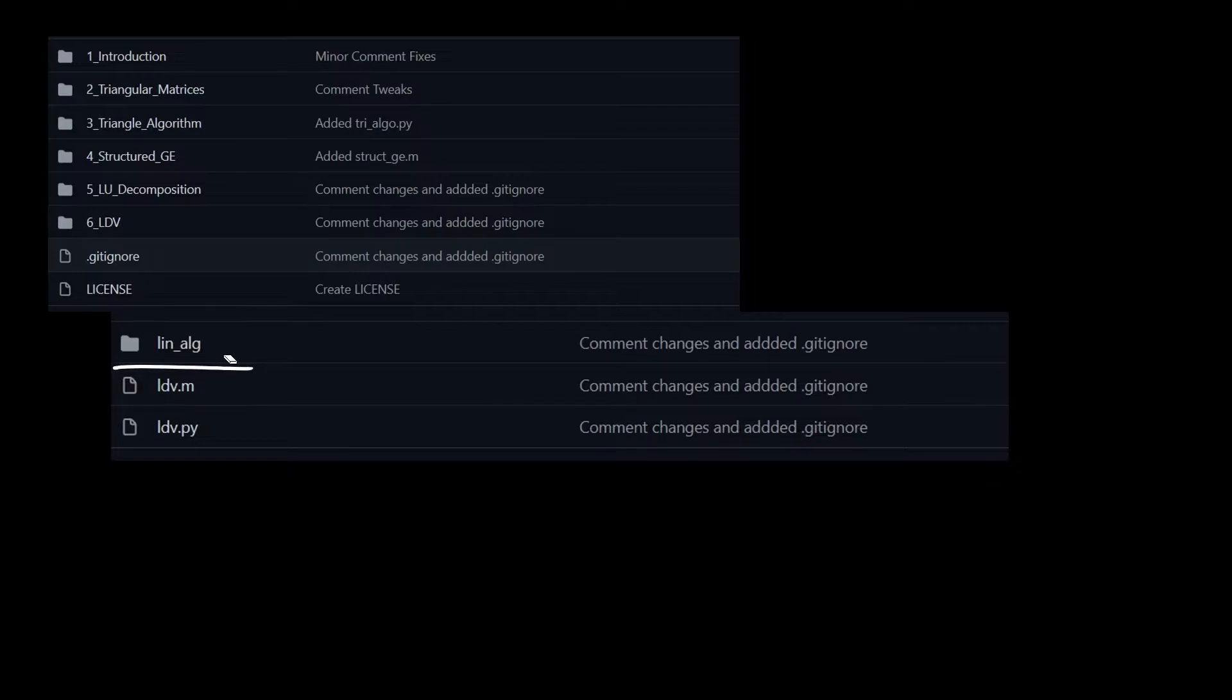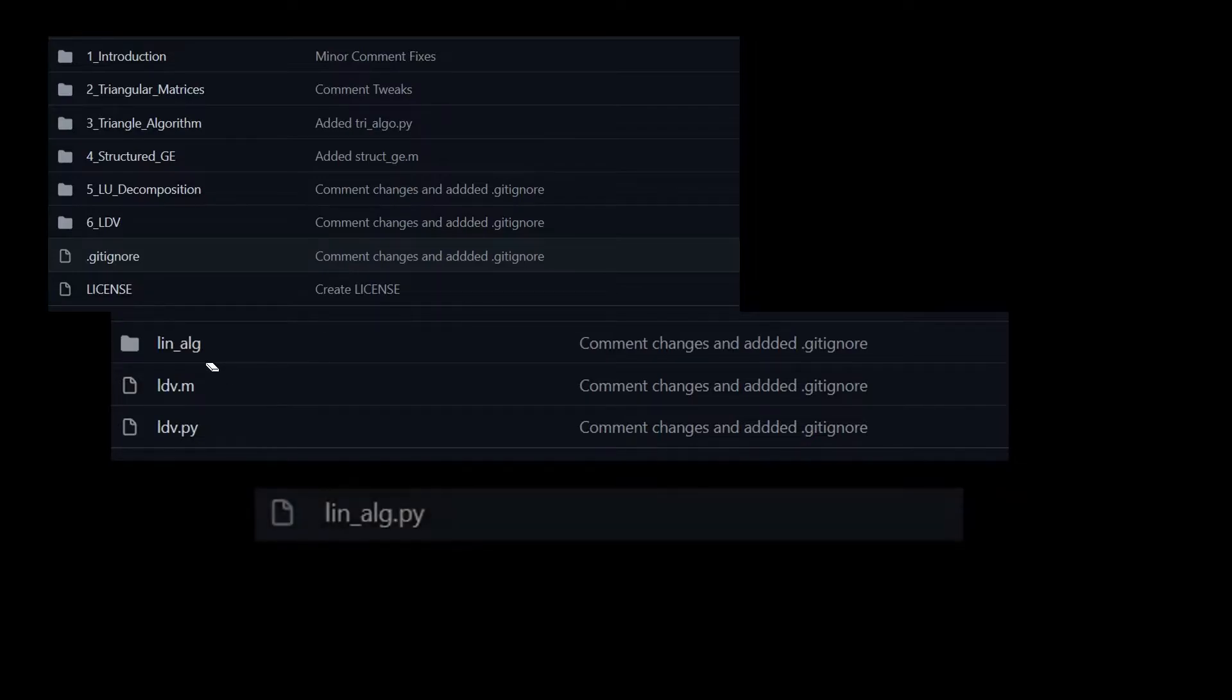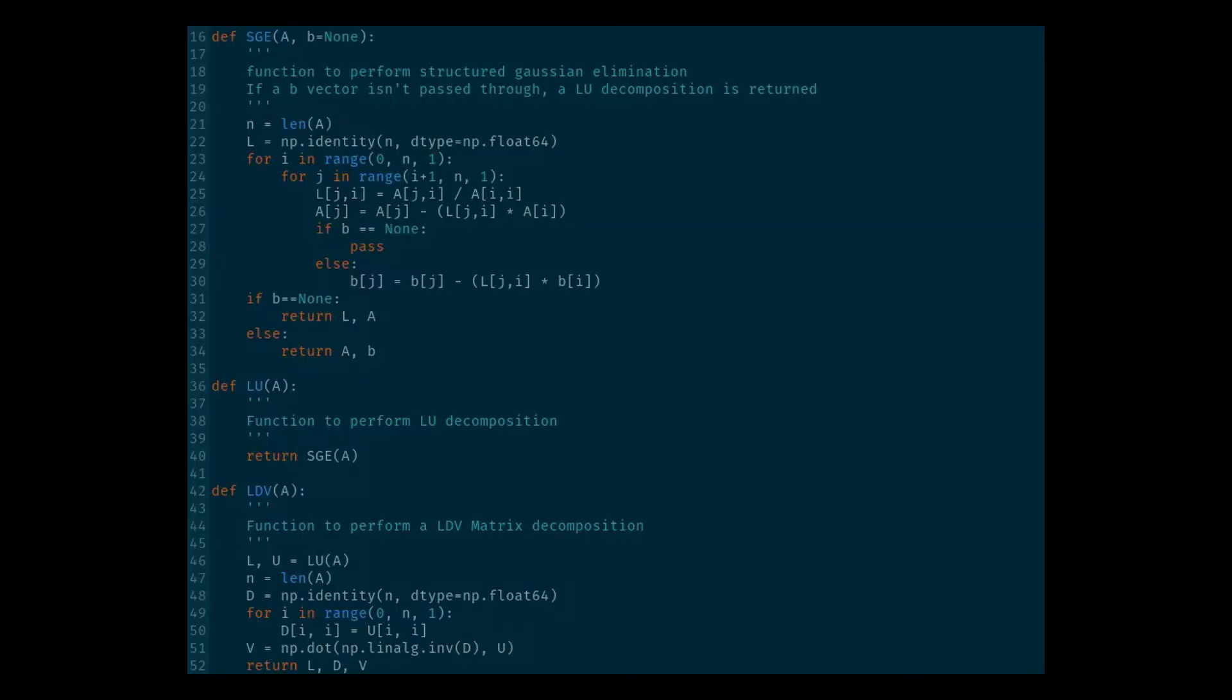So, we're going to dive into this lin-alg directory. Where inside, we will find the lin-alg.py file that we'll be working on right here. Now, this is quite a big file now since we're adding in a new function, but you'll see that I haven't changed anything with the LU decomposition function or the structured Gaussian elimination function. Both of those were episodes five and four.